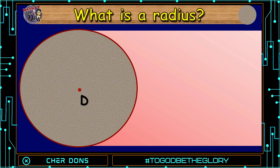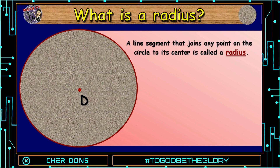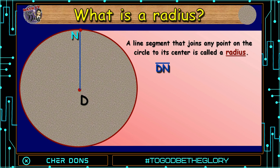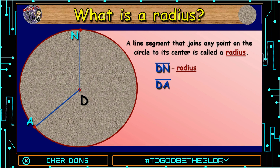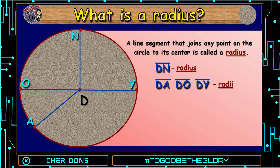Next, what is a radius? A line segment that joins any point on the circle to its center is called a radius. Look at line segment DN — this one is a radius. How about line segment DA? Correct! This one is also a radius. What if we have a straight line connecting point O and point Y passing through the center? Line segment DO and line segment DY are also radii. If we have two or more radii, we call it radii.